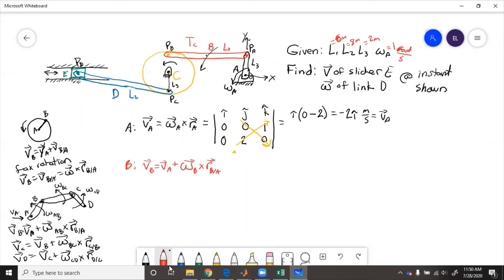Well, if it's curvilinear translation, for any type of just translation, omega is going to be zero. So we get VB equals VA, which equals the same thing we found up here, negative 2 i hat meters per second equals VB.